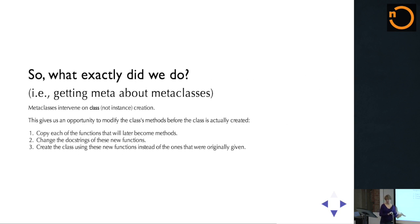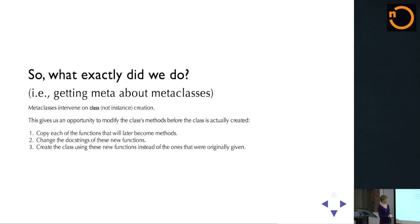So just to take a step back — what exactly did we do, i.e., getting meta about metaclasses. Metaclasses intervene on class creation — that's class, not instance. So it's the thing that creates instances; we're changing that thing. Because we're able to intervene on class creation, we can make some changes. In this particular case we copied the functions, changed their docstrings, and then finally created the class using those modifications.